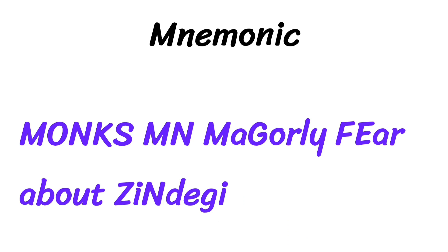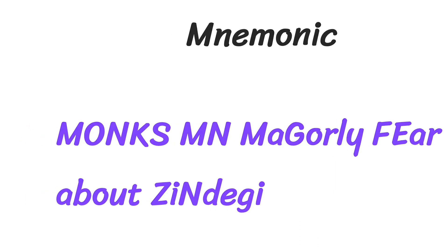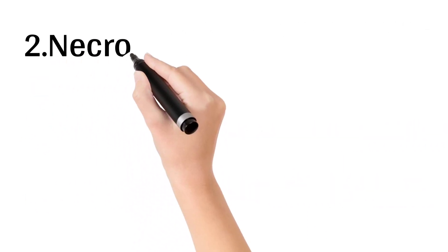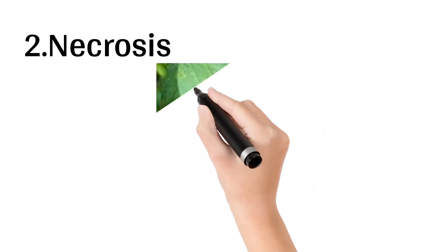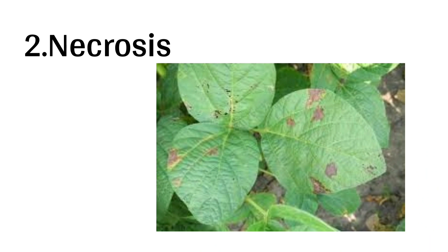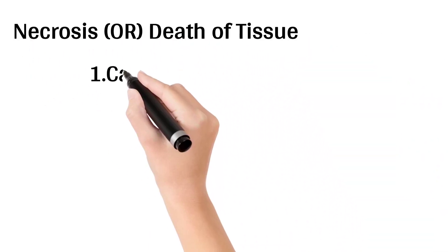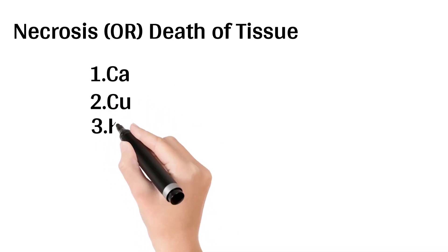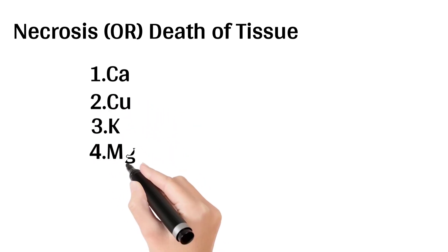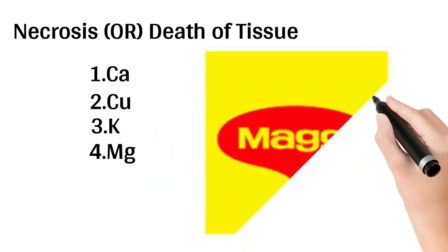This mnemonic will be very useful for your NEET exam. The next deficiency symptom is necrosis, otherwise called death of tissue, which especially occurs in leaf tissue. It is caused by the deficiency of four elements: calcium (Ca), copper (Cu), magnesium (Mg), and potassium (K).